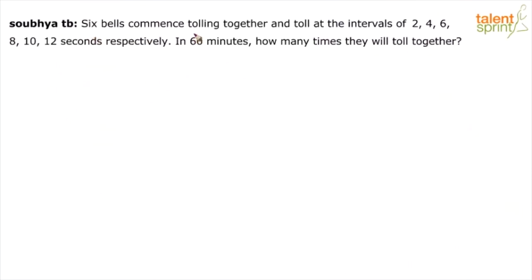Six bells commence tolling together and toll at the intervals of 2, 4, 6, 8, 10 and 12 seconds respectively. In 60 minutes, how many times will they toll together?